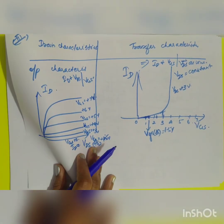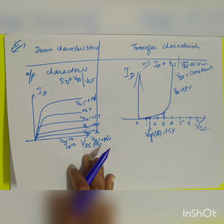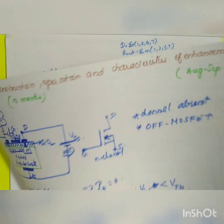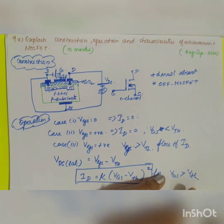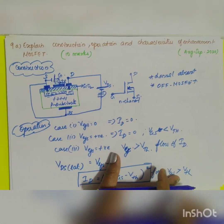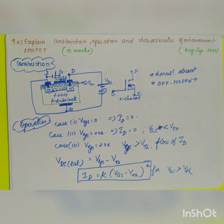These are the important points to write for 10 marks. You need to elaborate and write construction, operation, and characteristics in detail.